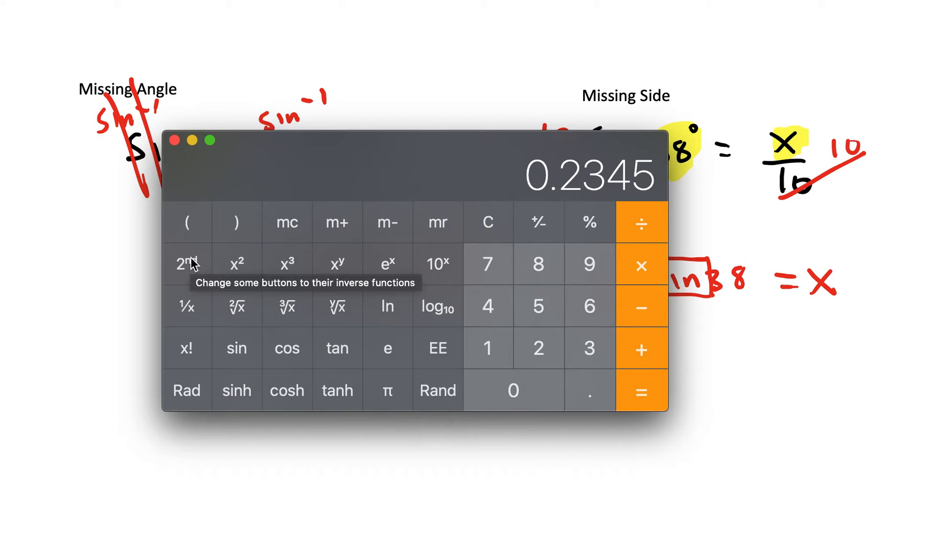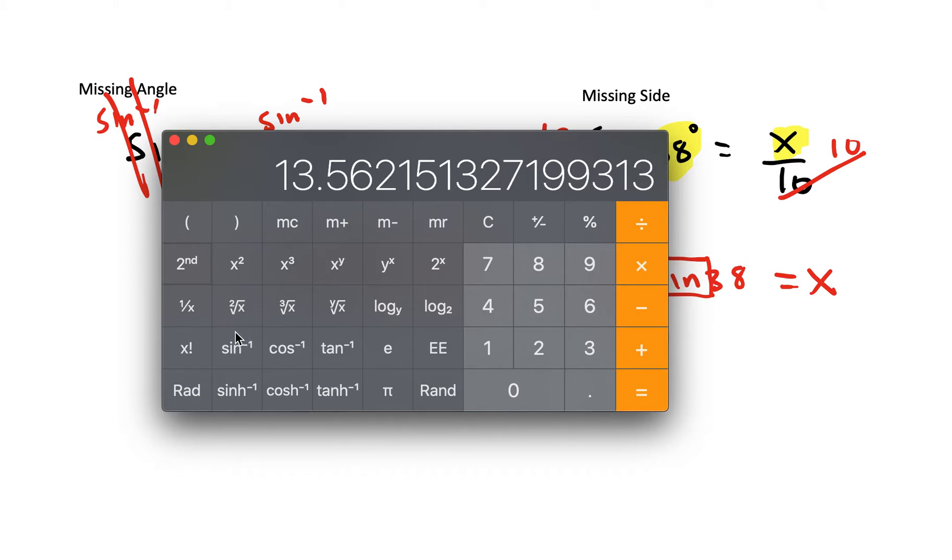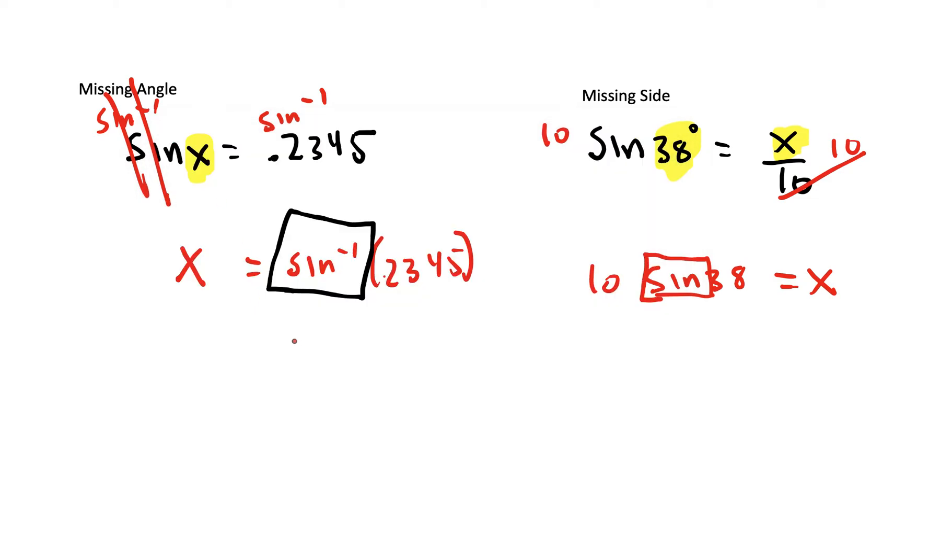And then we're going to click the second button. So now we can see sine to the negative 1, cosine to the negative 1, tangent to the negative 1. Ours is sine, so we're going to click that, and I'll get 13.56 degrees. If we round it to the nearest whole degree, we get 14 degrees.